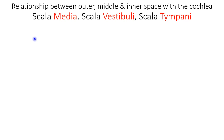In this slide, we are going to discuss about the relationship between the outer, middle, and inner space with the cochlea, which includes three chambers: scala media, scala vestibuli, and scala tympani.